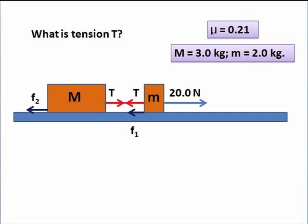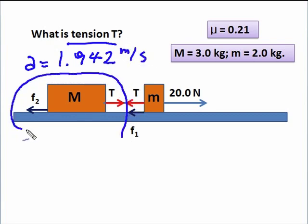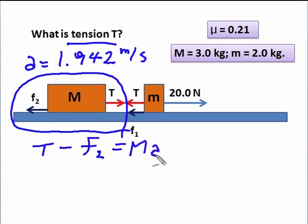Now, what's the tension? Once again, we need to isolate one of the masses. And remember that we've already found an acceleration of—we'll use the whole number—1.942 meters per second squared. We know that and we'll need that. We'll isolate that one system and we'll say T - F2 = big MA. F_net is MA. It's always F_net = MA.